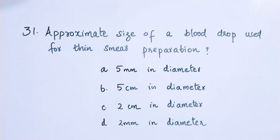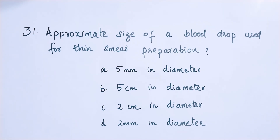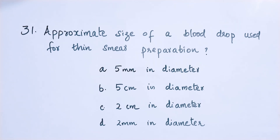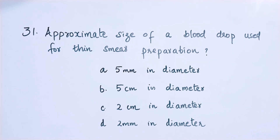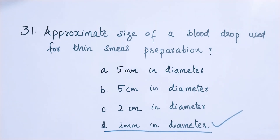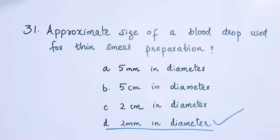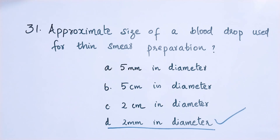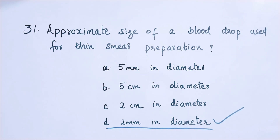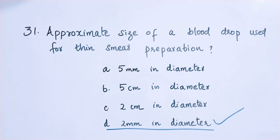Question number 31: Approximate size of a blood drop used for thin smear preparation — option A: 5 millimeters in diameter, option B: 5 centimeters in diameter, option C: 2 centimeters in diameter, option D: 2 millimeters in diameter. The right answer is option D — 2 millimeters in diameter.